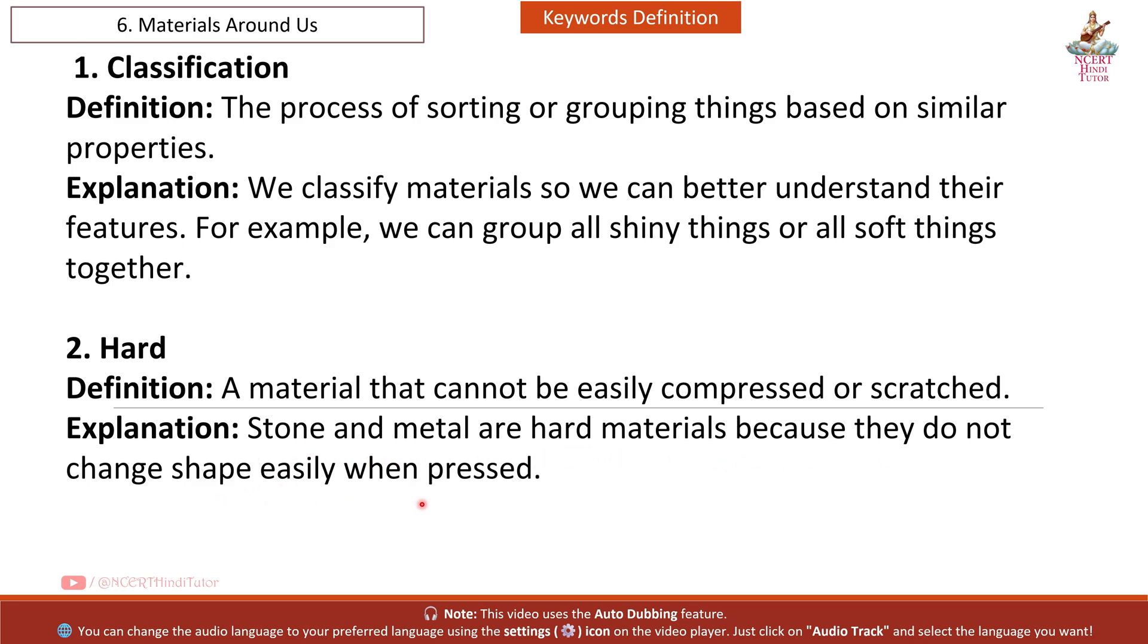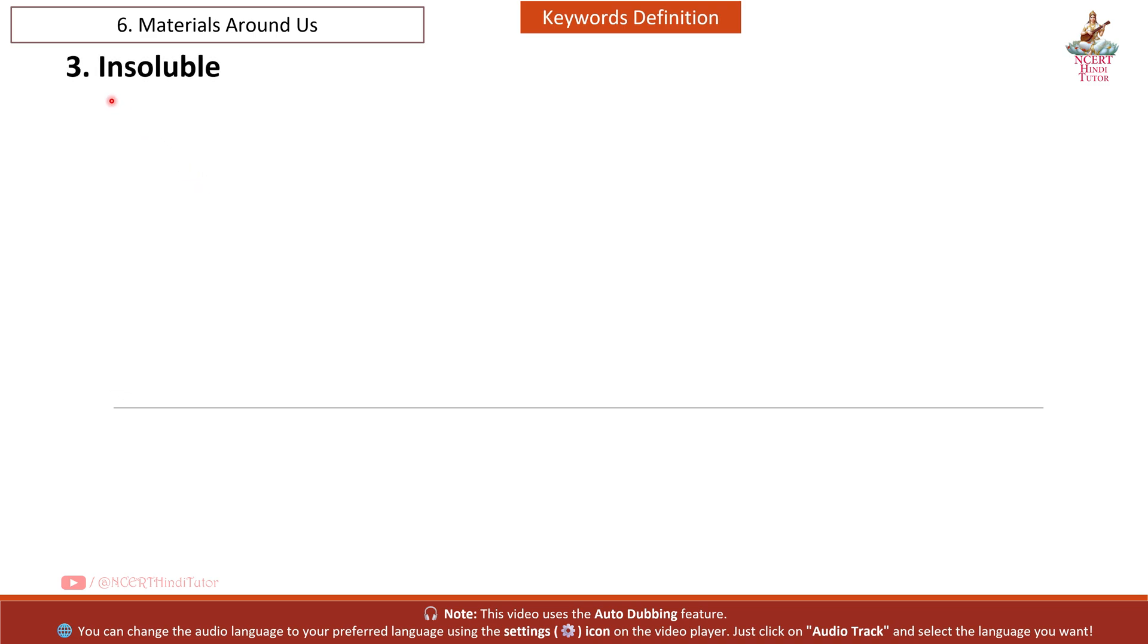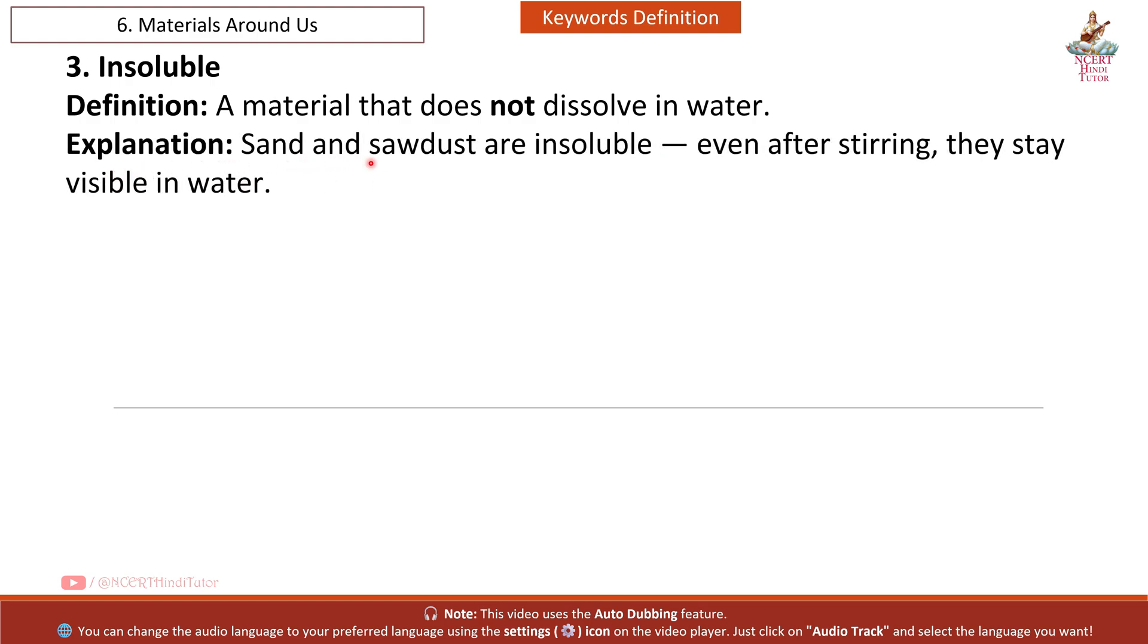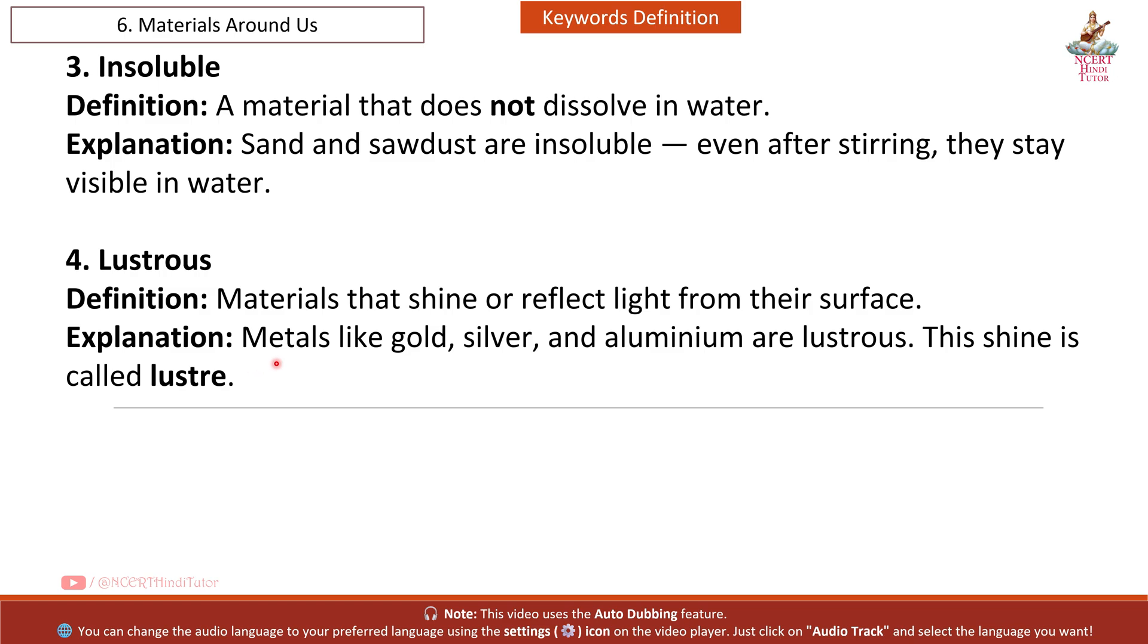Third: Insoluble. Definition: a material that does not dissolve in water. Explanation: sand and sawdust are insoluble. Even after stirring, they stay visible in water. Fourth: Lustrous. Definition: materials that shine or reflect light from their surface. Explanation: metals like gold, silver and aluminium are lustrous. This shine is called lustre.